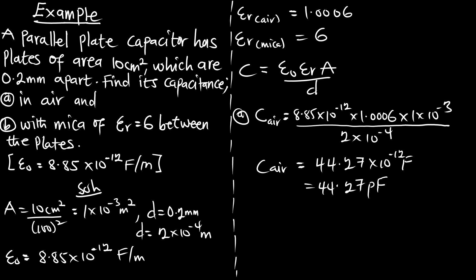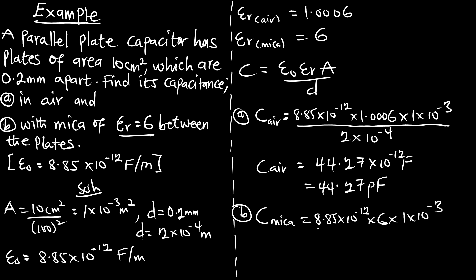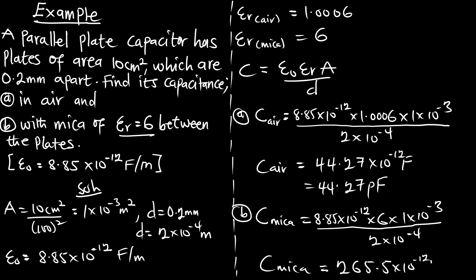For part B, with mica separating the plates: C = 8.85 × 10⁻¹² × 6 × (1 × 10⁻³) / (2 × 10⁻⁴). The calculation gives 265.5 × 10⁻¹² farads, or simply 265.5 picofarads.